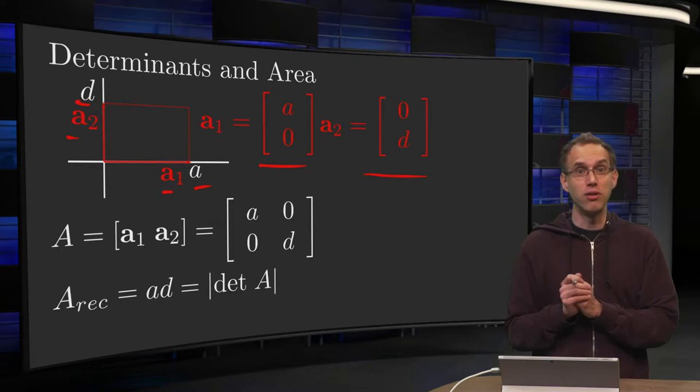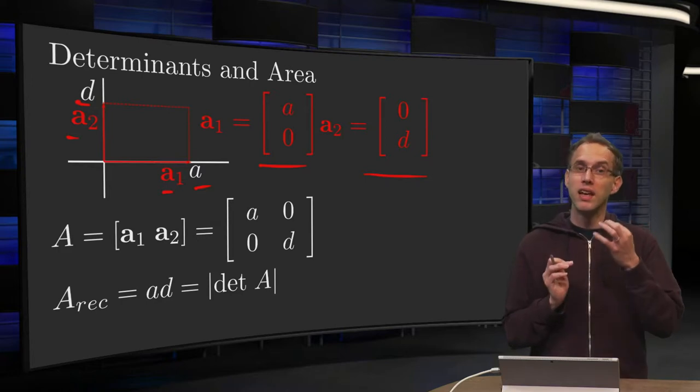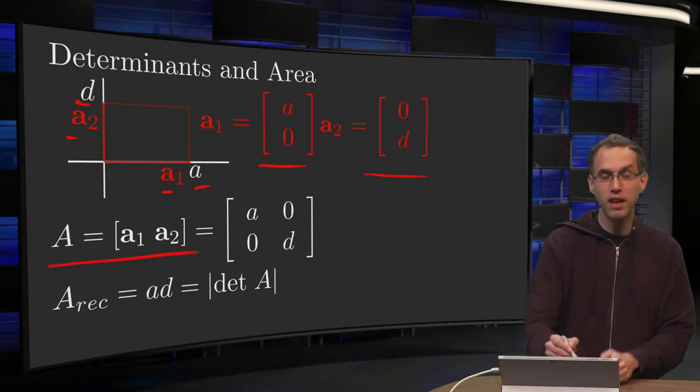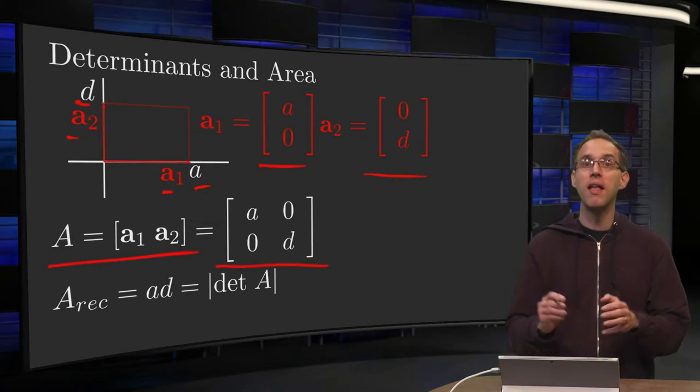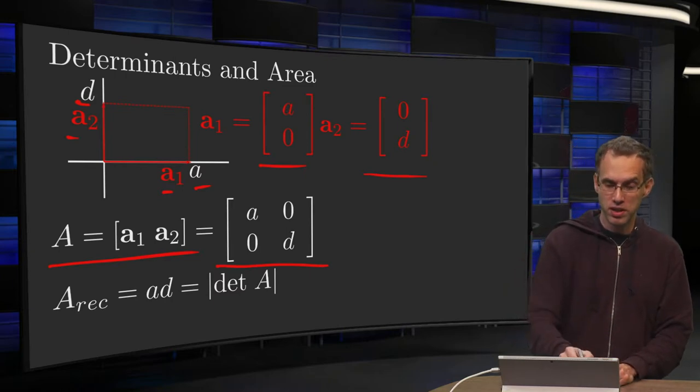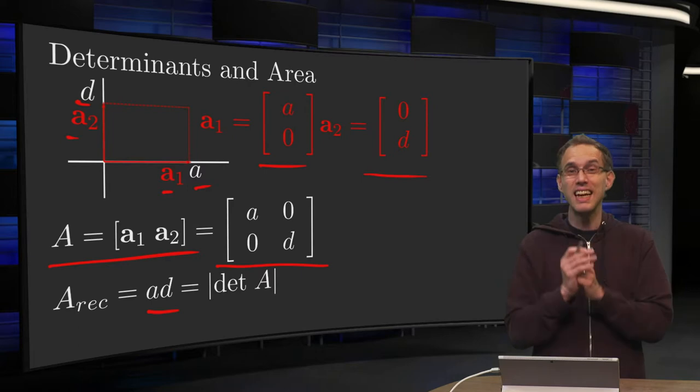Of course, the area of a rectangle is just a times d. Now what happens if you put a₁ and a₂ in a matrix? We form matrix A and compute the determinant. The determinant is a times d, which is exactly equal to det(A).